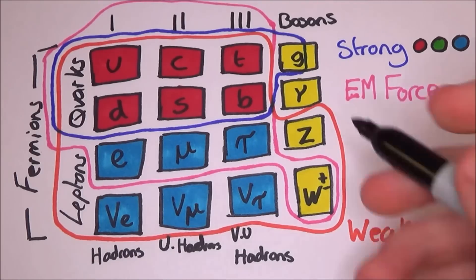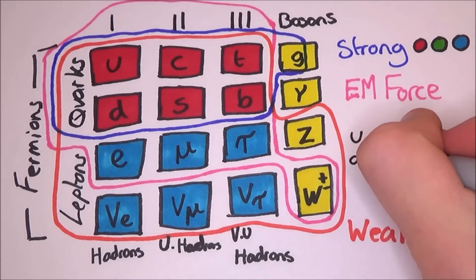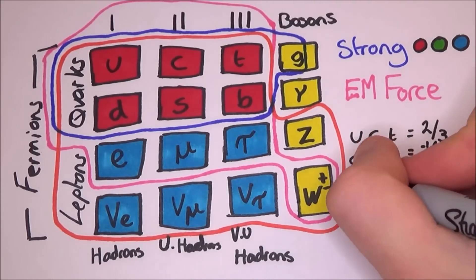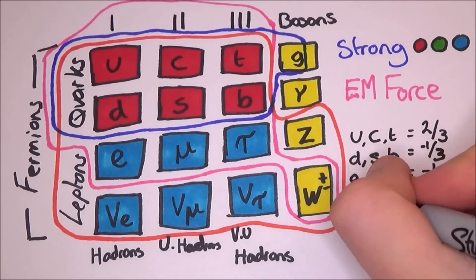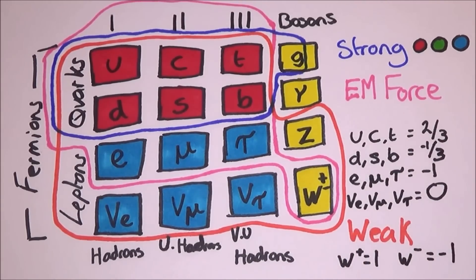Down, strange and bottom all have a charge of minus one third. Electrons, muons and tau all have a charge of minus one. W plus and w minus have a charge of plus one and minus one respectively.